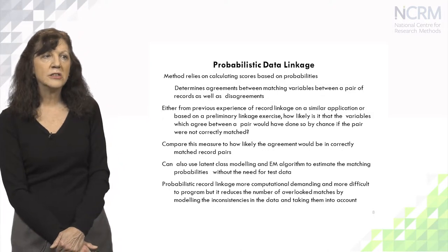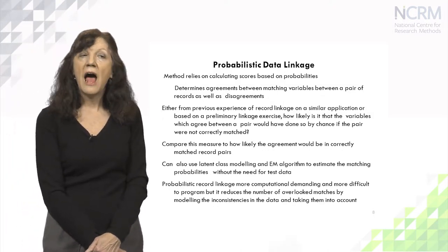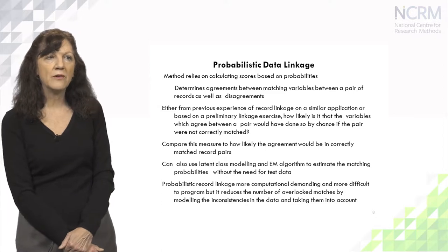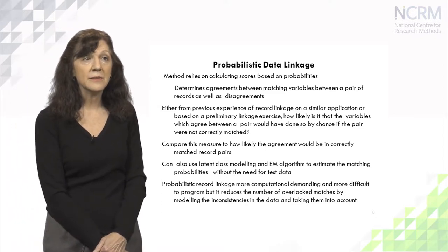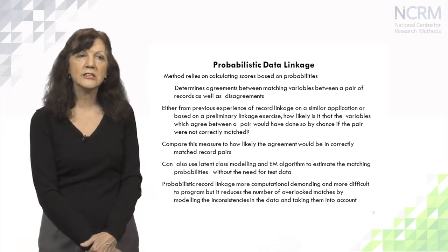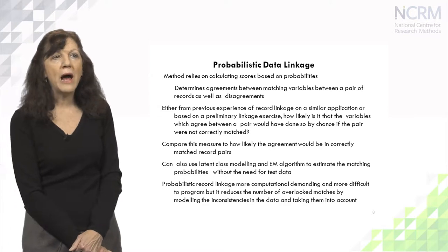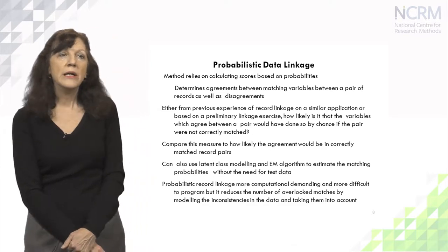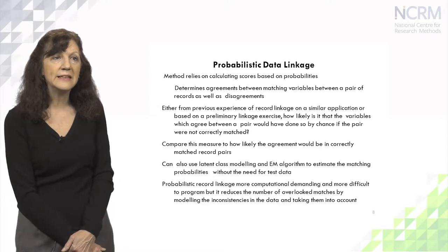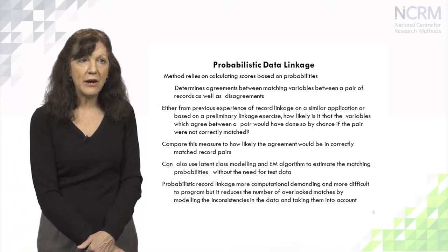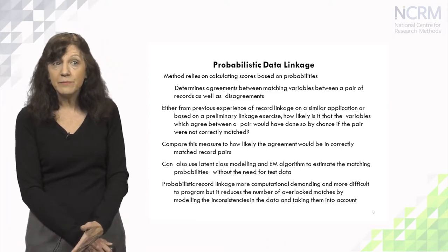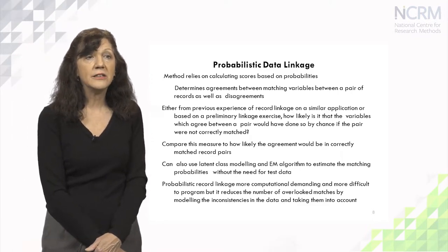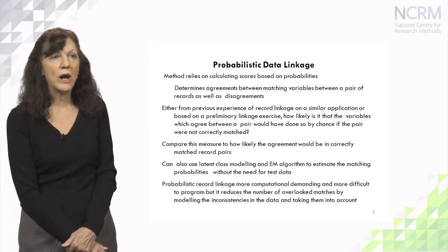In probabilistic data linkage, the method relies on calculating scores based on probabilities, determining agreements and disagreements between matching variables for a pair of records. Either from previous experience of record linkage on a similar application, or by taking a preliminary linkage exercise to produce a gold standard linkage, we need to calculate how likely it is that variables agreeing between a pair would have done so by chance, compared to how likely the agreement would be in correctly matched record pairs.